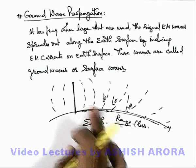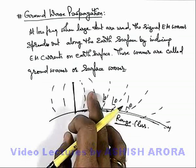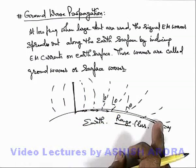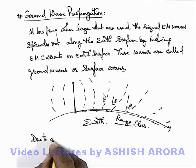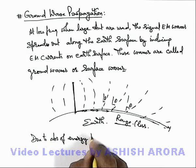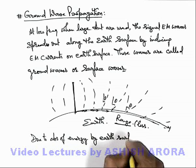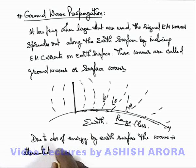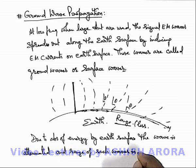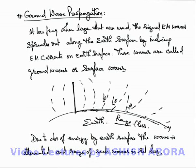The earth absorbs electromagnetic energy emitted from the antenna. The surface wave glides over the earth, so earth is supporting propagation of waves as well as absorbing energy, so the range of such surface waves is quite less. Due to absorption of energy by earth's surface, the wave is attenuated and the range of such waves is relatively less compared to sky waves or space waves. Such waves are used whenever the propagation distance is not very large, so in case of small range propagation, surface wave or ground wave propagation is used.